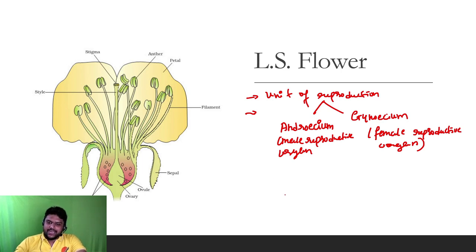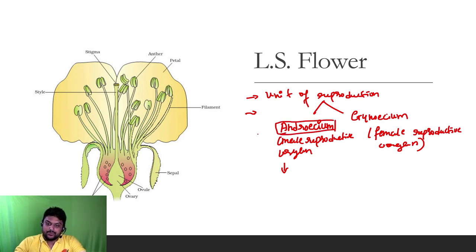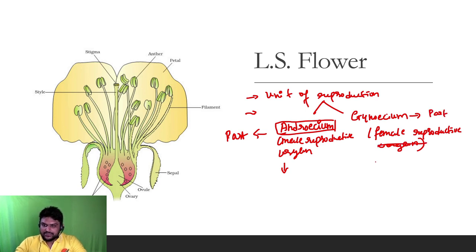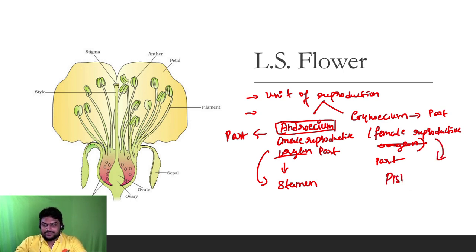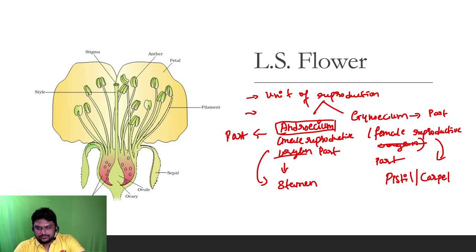These two are very important things. The androecium is the male reproductive part. The stamen is the male reproductive organ. The pistil is the female reproductive organ. We have to divide the flower as a longitudinal section.